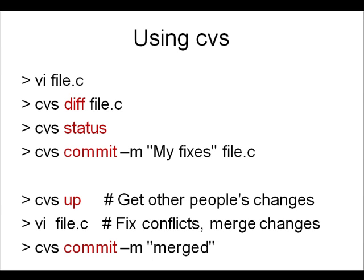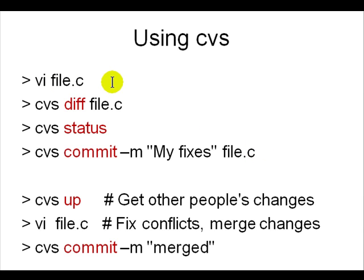To use it: edit a file, then do cvs diff — it will tell you what you changed. You can do cvs status to see if a file is modified. Once you want to put your changes back into the repository, use cvs commit -m 'my fixes' and the filename. Later, in another sandbox, use cvs update to get all changes from other people. If you and someone else both made changes you will get conflicts — cvs status will show a C next to the filename. You then edit the file, manually pick the correct changes, merge, and commit back.